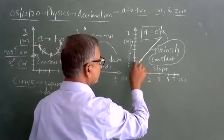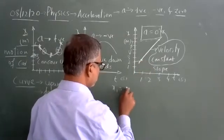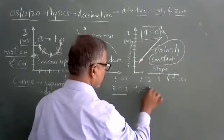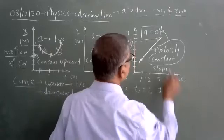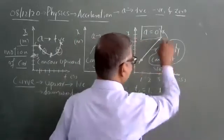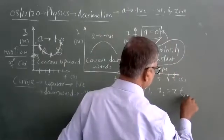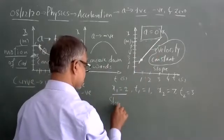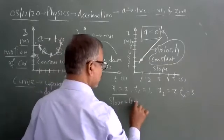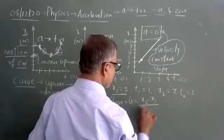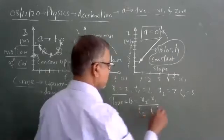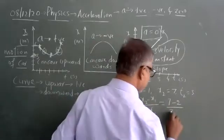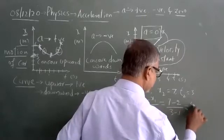This is the starting point. The object starts from here. x1 equals 2 because the starting point is here; corresponding time is t1 equals 1 second. Similarly, x2 equals 7 and the time interval t2 equals 3 seconds. Now, my velocity formula: slope equals velocity. Velocity equals x2 minus x1 divided by t2 minus t1. x2 is 7, x1 is 2, divided by t2 minus t1 which is 3 minus 1. We get a value: it is 5 divided by 2.